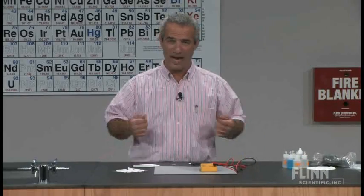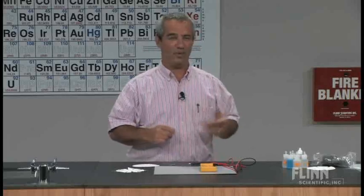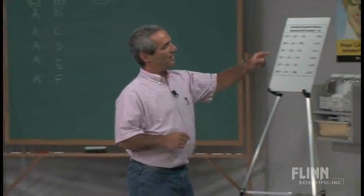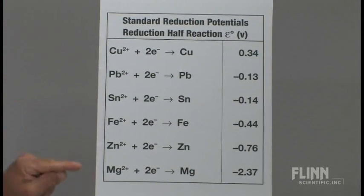The ions have different tendencies to attract electrons to them. When you pair them up one against another, we've got a chart over here that shows several reduction potentials for six common metals: copper, lead, tin, iron, zinc, and magnesium, all two positive ions.